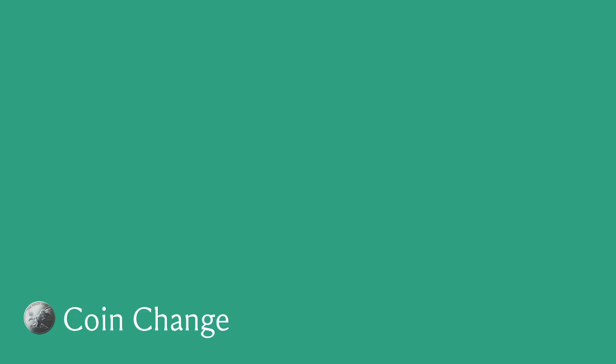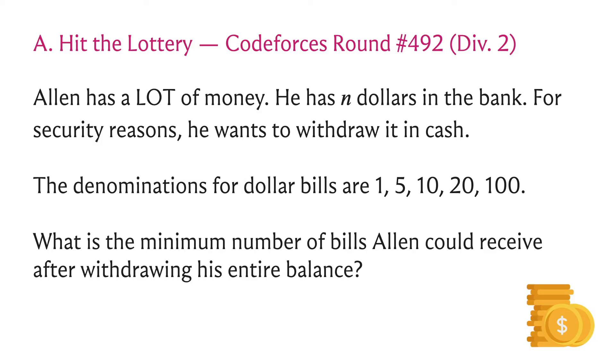Now the optimization objective here is usually that you want to minimize the number of notes that are generated, and you usually assume that you have an unlimited supply of notes in each specific denomination. A specific version of this problem did show up once on CodeForces—this was problem A in round number 492 in the second division. You want to generate n dollars using bills of denominations 1, 5, 10, 20 and 100, and the optimization objective is to minimize the number of bills that you use.